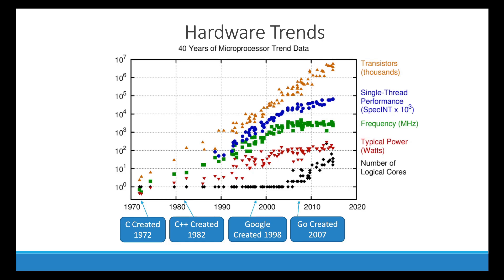To answer this we need to look at hardware trends, particularly the frequency of the CPU. As you can see, the speed of the CPU has been increasing over time. Keep in mind this is not a linear graph — literally a CPU today could be a thousand times faster than a CPU in the 1970s. So over time we got a lot of performance from just making these chips faster.